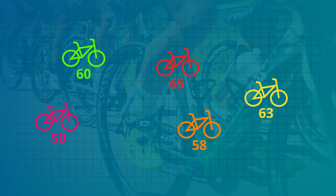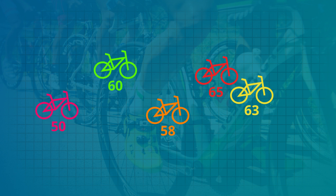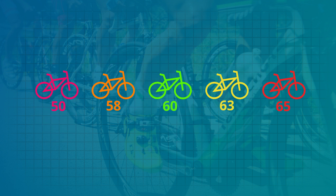In this example, five cyclists ride one kilometer in the times shown. Let's find the median time. First we reorder the times from smallest to largest.